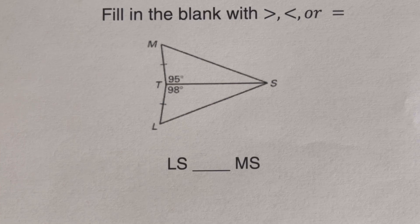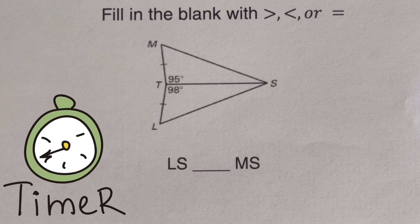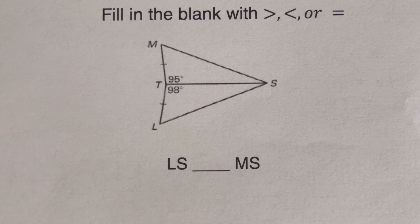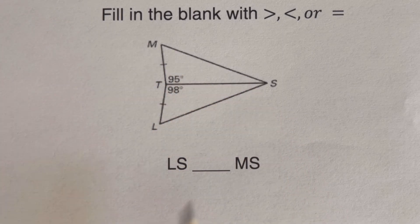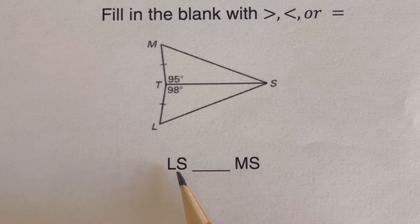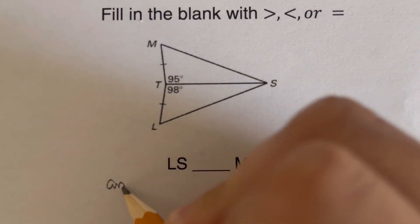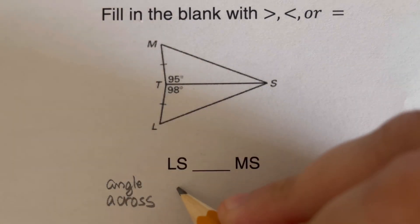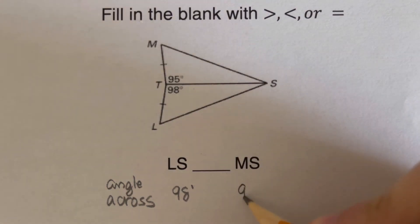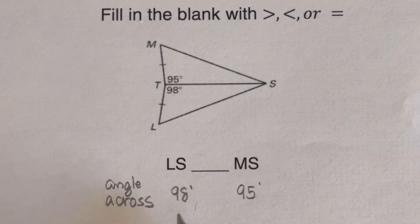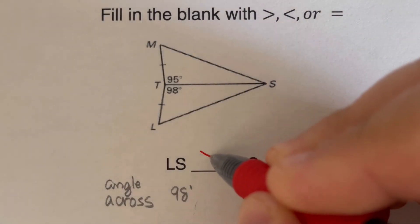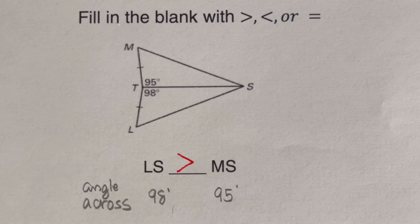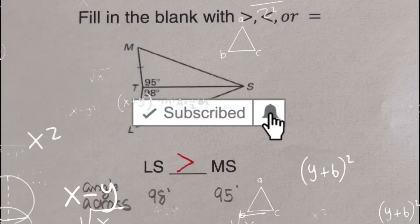Pause the video and try this next problem. We need to determine the relationship between LS and MS. The angle across LS is 98 degrees and the angle across MS is 95 degrees. Since 98 is greater than 95, LS is greater than MS. If you found this video helpful, hit like and subscribe for more math videos.